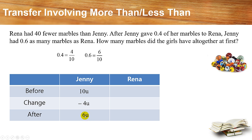In the end, Jennie had 6 out of 10 as many marbles as Rina, because 0.6 is 6 out of 10. So what does 6 out of 10 mean? It means Jennie is 6 units while Rina is 10 units. Jennie is indeed 6 units after, so Rina will be 10 units after.